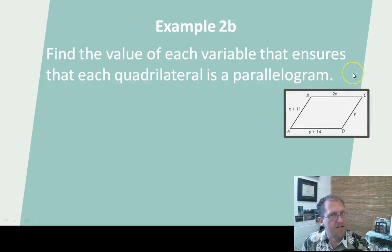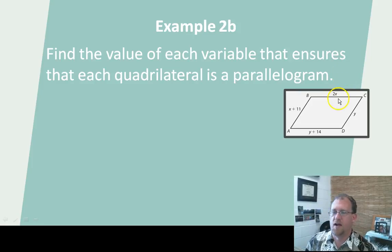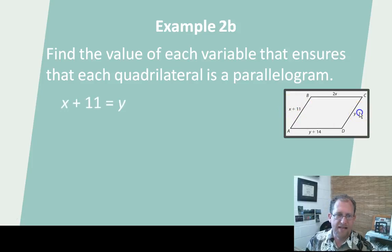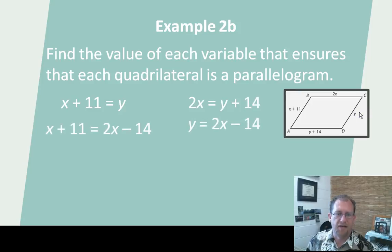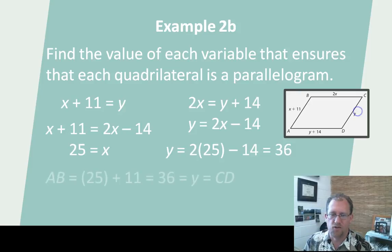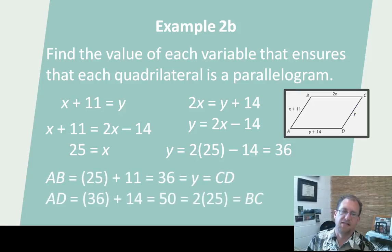Here I have another potential parallelogram. If I want to show that it is in fact a parallelogram, then these two opposite sides need to be congruent and these two opposite sides need to be congruent. So 2x should equal y plus 14, and x plus 11 should equal y. Setting up these equations, substituting and solving, I can determine that x equals 25 and y equals 36. Then I can plug those values back in and get the actual dimensions of the sides of this parallelogram.